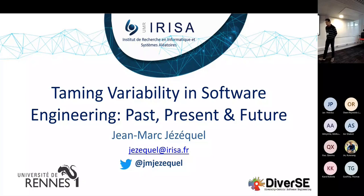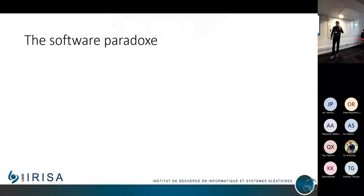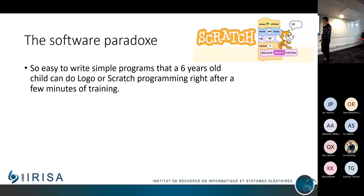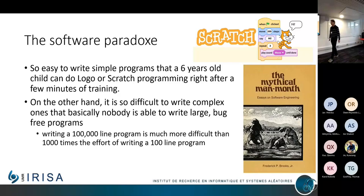I would propose that what we are trying to do is to tame variability. There is something well known with software — an incredible paradox by which writing a simple program is very easy. Anybody can do it; even a five or six year old can start playing with Scratch and write programs that are actually doing very impressive stuff. But on the other hand, writing complex software is so complex that basically nobody is able to do it.